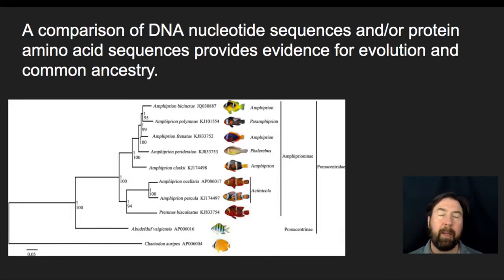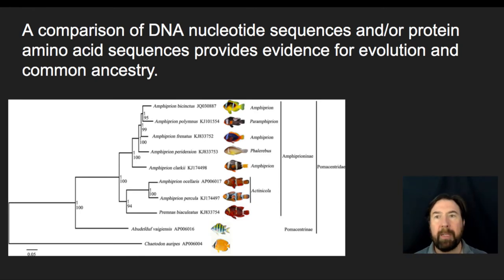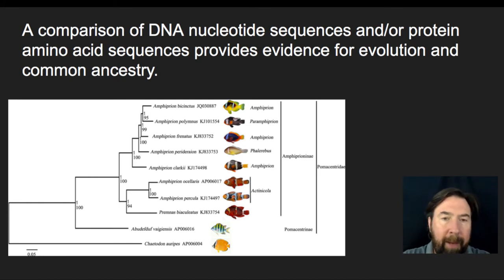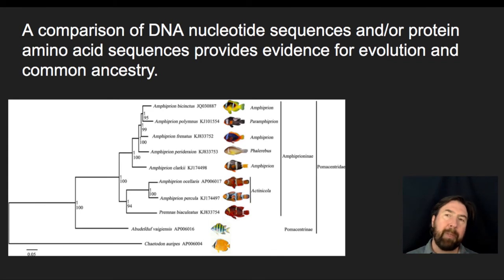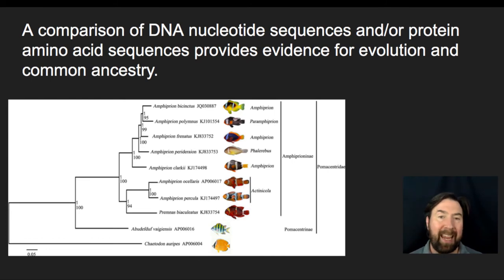The other thing we can do, in addition to morphology and the fossil record, is compare DNA nucleotide sequences or protein sequences based on amino acid sequences to provide evidence of evolution and determine common ancestry. We get various samples, look at key proteins or sequences that code for specific proteins, and compare them to see how many mutations have accumulated and what percentage of the genome is conserved.